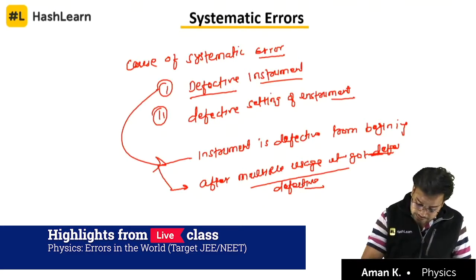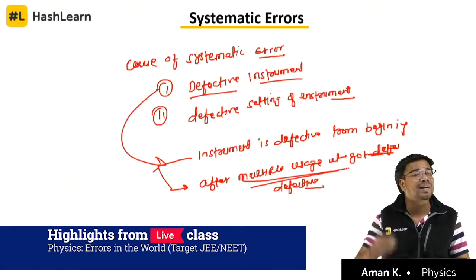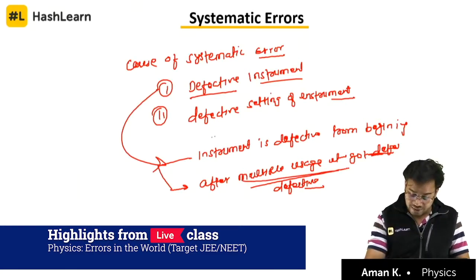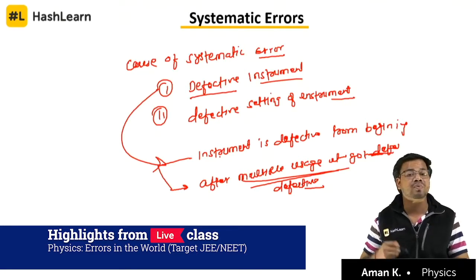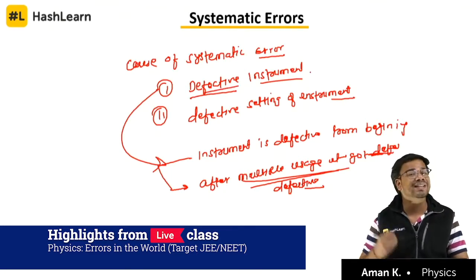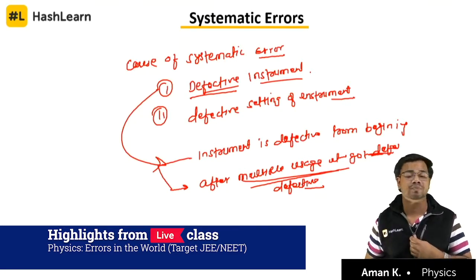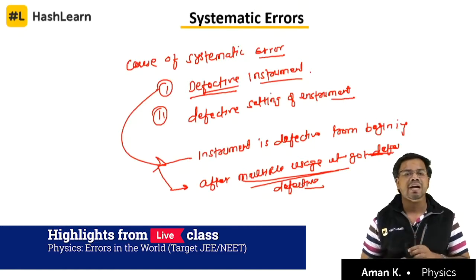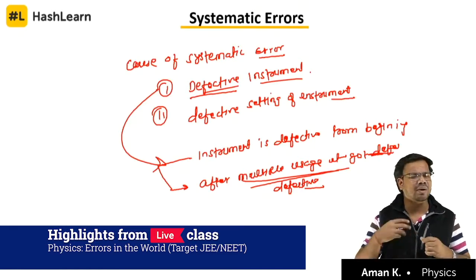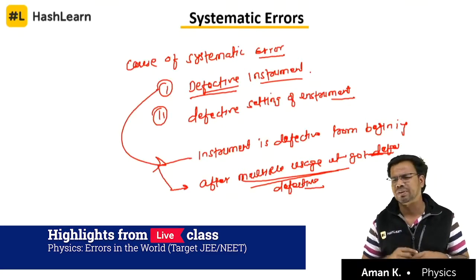How will you eliminate this type of error due to a defective instrument? How can you eliminate the error? Because of a defective instrument, you have to take the readings from another instrument. For example, suppose I am suffering from fever and I am measuring the temperature of my body through a thermometer and got 98-point something, but I am not satisfied.